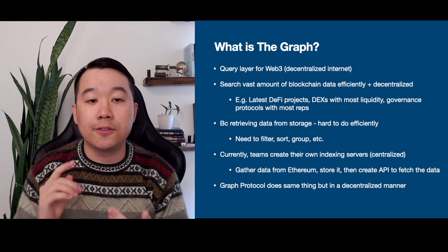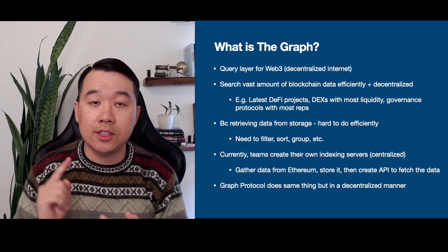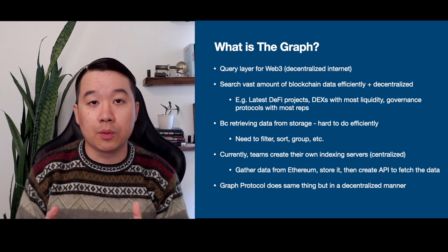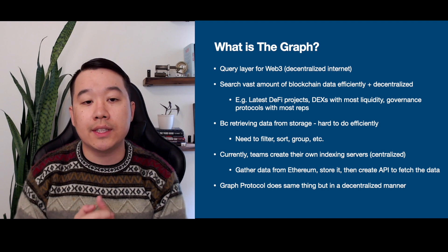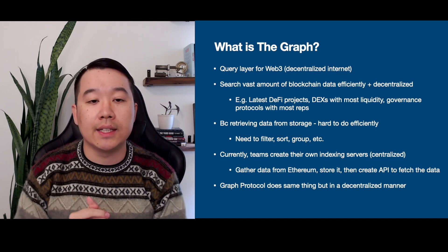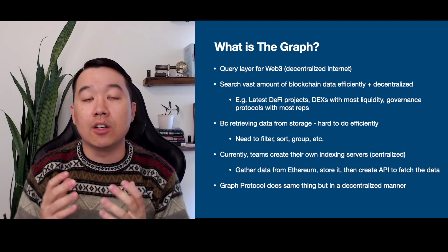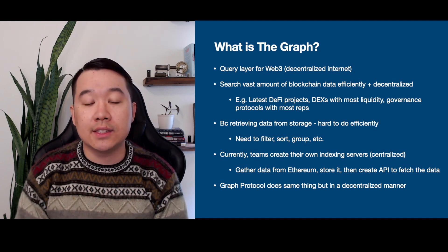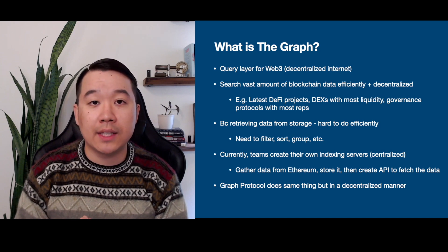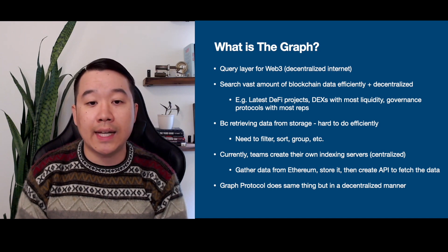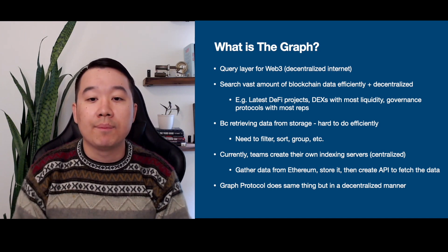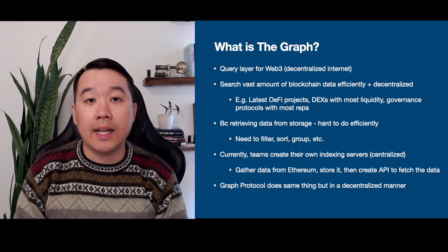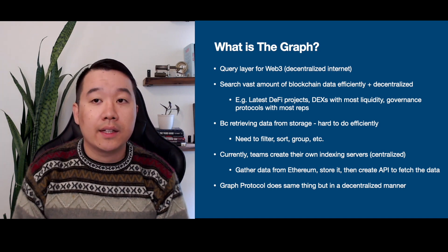Retrieving data from storage is really hard to do efficiently. You need to filter the data, sort it, group it, and do much more with it. Currently, what teams do in the DeFi space is create their own indexes and servers — they gather data from Ethereum that they'll need for their dApp, store it centrally, and then create an API to fetch the data.